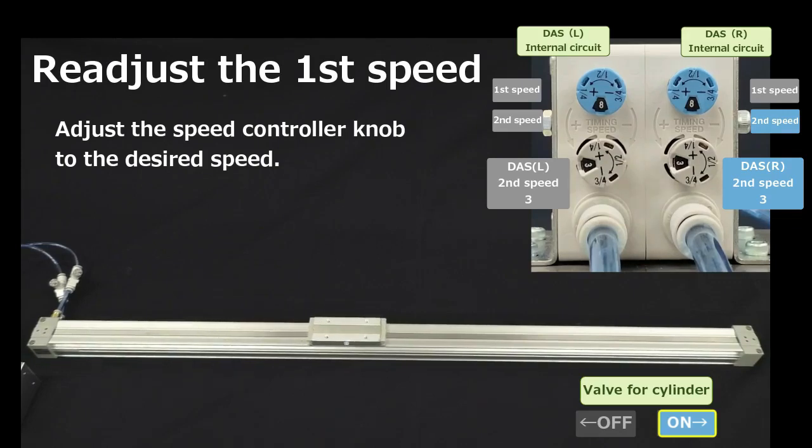Here, the speed controller is fully opened in a single adjustment. If the cylinder collides with the stroke end, adjust the knob of the speed controller in the negative direction to lower the first speed.